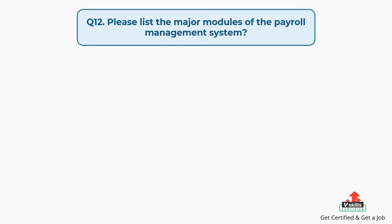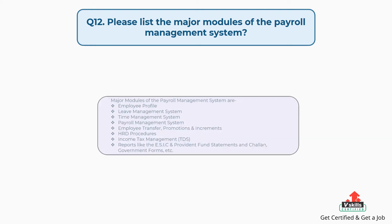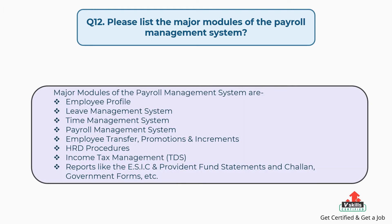Question number twelve: Please list the major modules of the payroll management system. The answer is, major modules of the payroll management system are: employee profile, leave management system, time management system, and payroll management system.